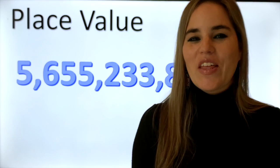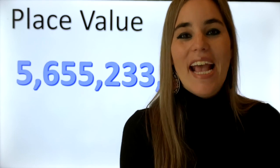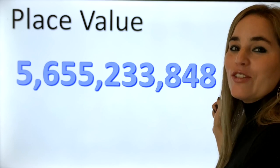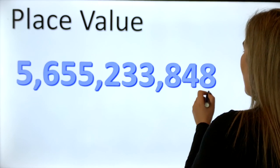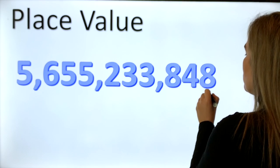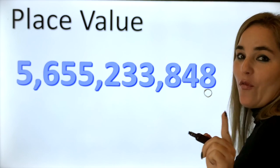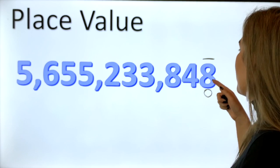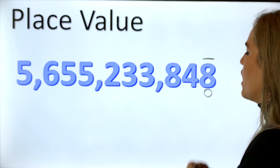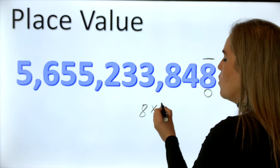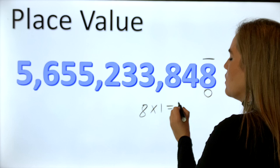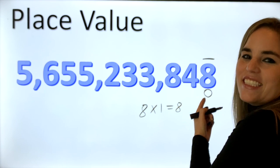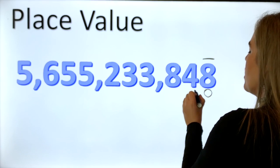Now that we know how to read the number, we're gonna look at the place value of each one of the digits. We're gonna start always from right to left. Here we have this 8 — it's in the ones place. Remember, take notes: the ones are worth one, which means that eight groups of one — eight times one — equals eight. So the value of this eight is eight.